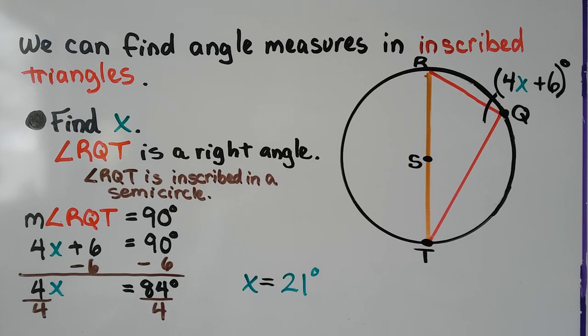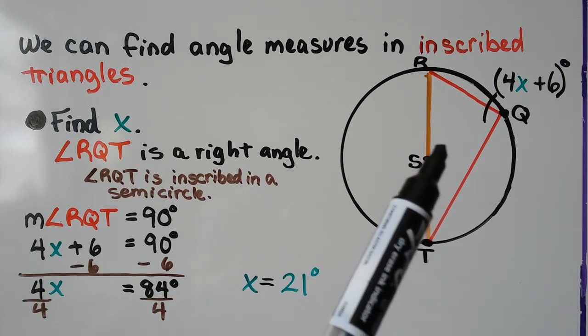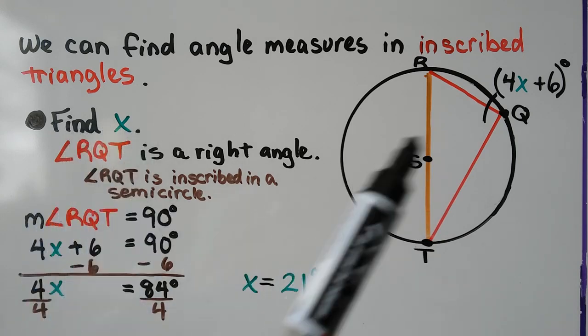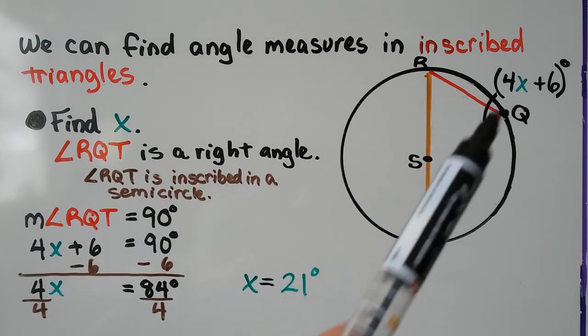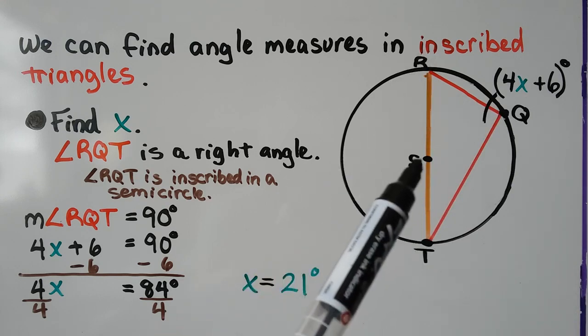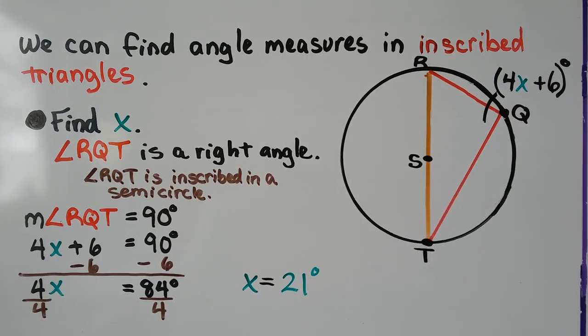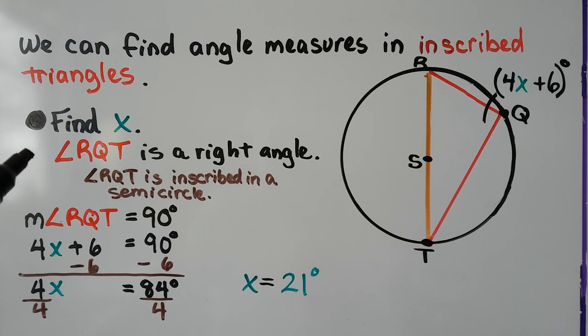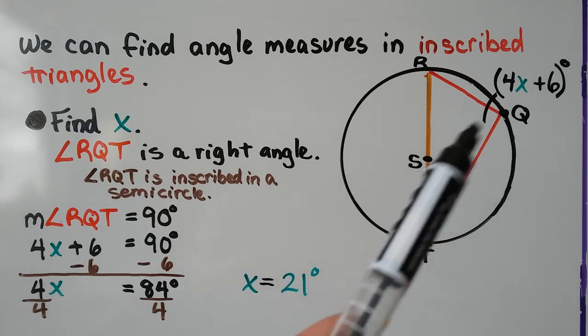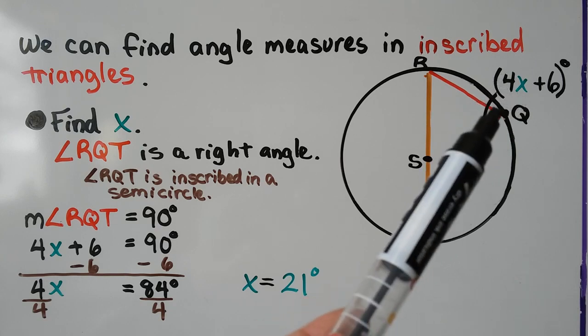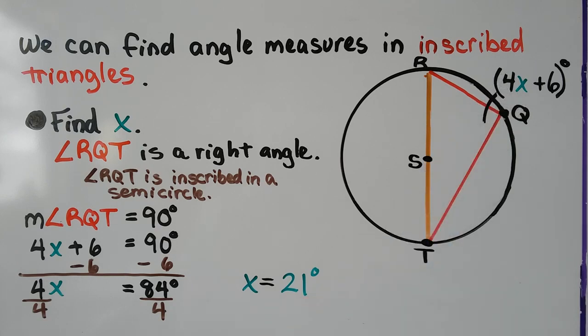We can find angle measures in inscribed triangles. This triangle is inscribed in this circle. It wants us to find x. We've got circle S, we have points R, Q, and T for the vertices of the triangle. The information is giving us that angle RQT is a right angle. So we know this is a right angle, so 4x plus 6 degrees must equal 90 degrees.